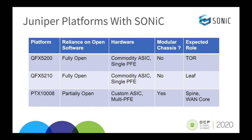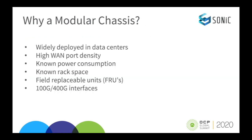It is partially open because we have a proprietary Juniper HAL that simplifies the management of the modular chassis. Why a modular chassis? Modular chassis exist today, so there's no reason Sonic shouldn't have one. Some reasons include: they are widely deployed in data centers, they have high WAN port density, known power consumption, known rack space, field replaceable units or hot-swappable devices, and they support high-speed interfaces like 100G and 400G.